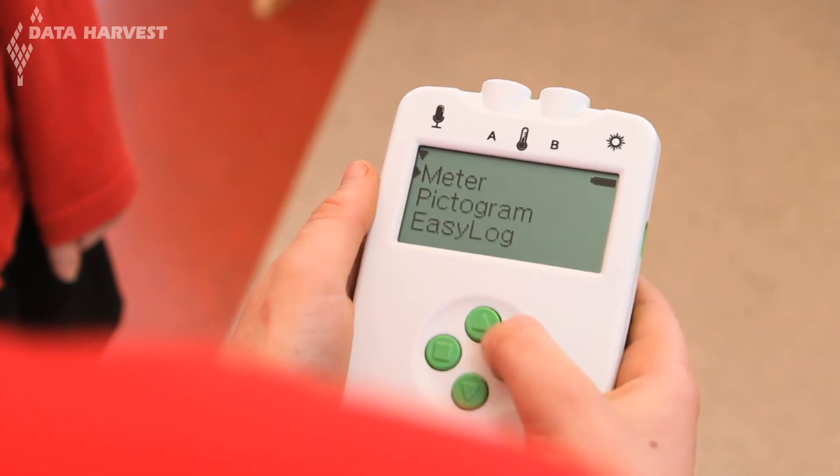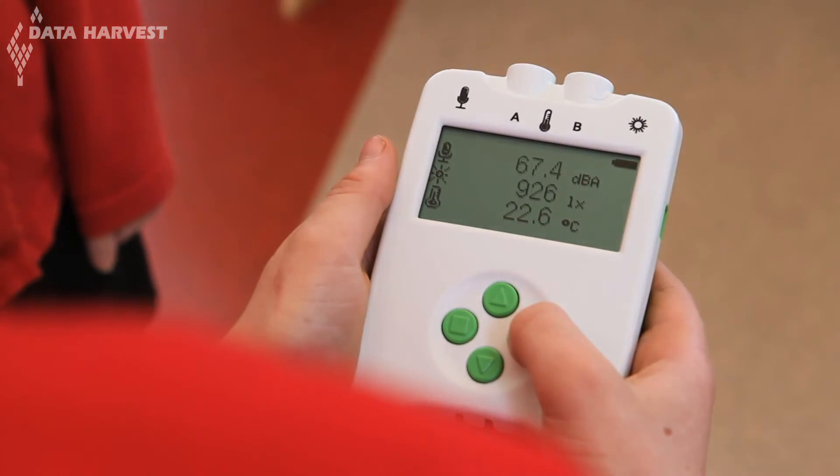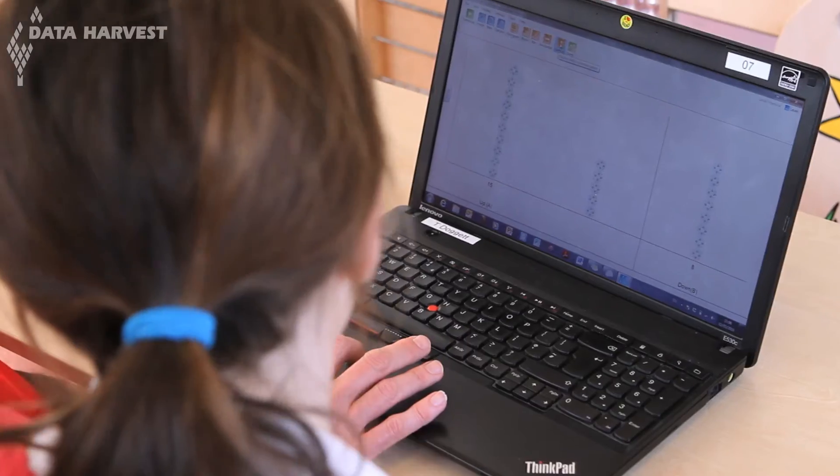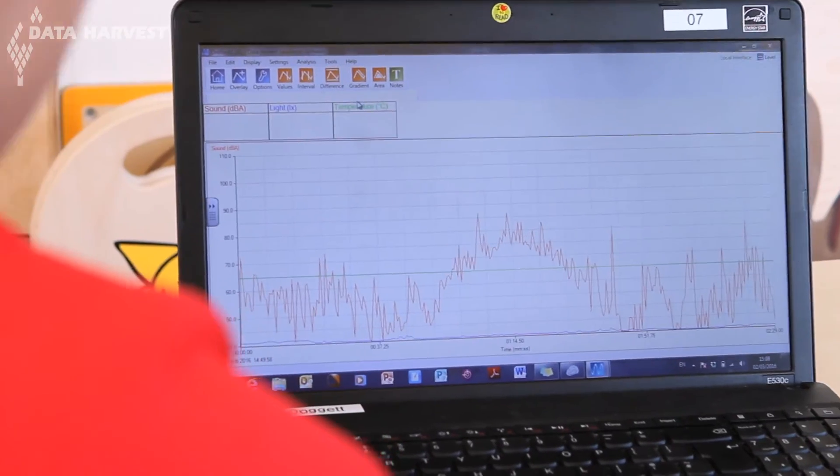Children can watch and record sound, temperature and light levels as they change. Captured data can be displayed as pictograms, bar charts and line graphs.